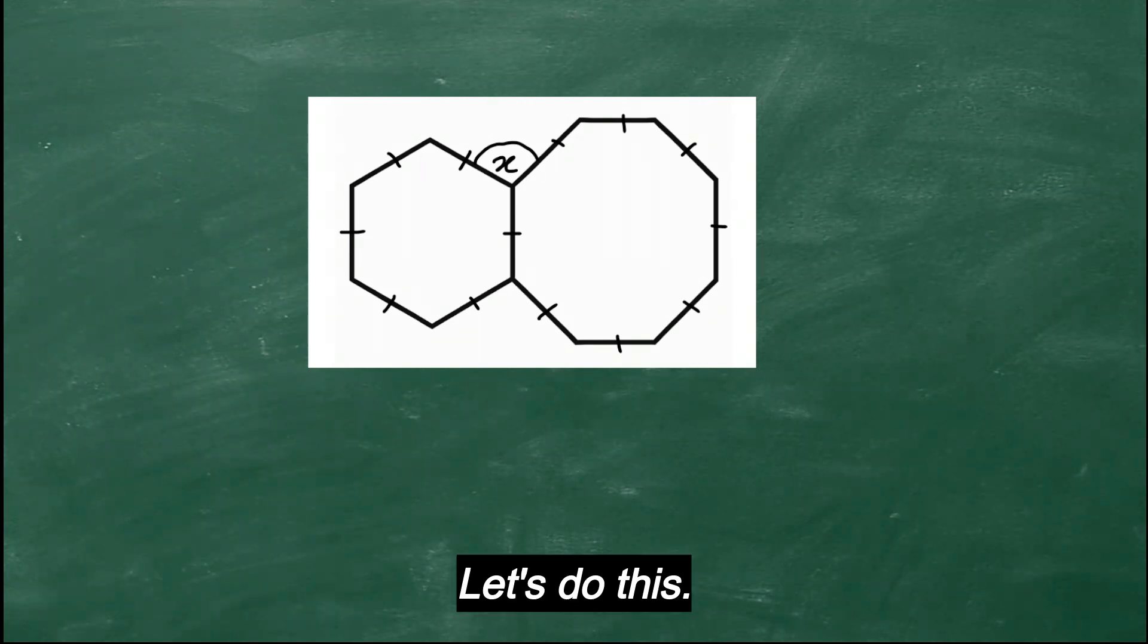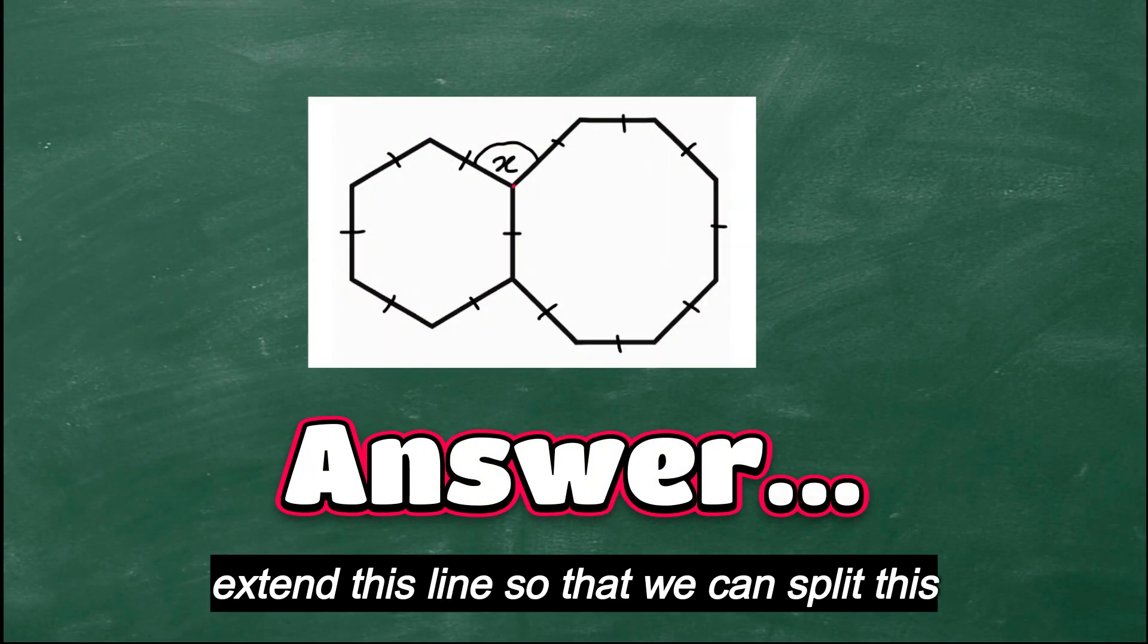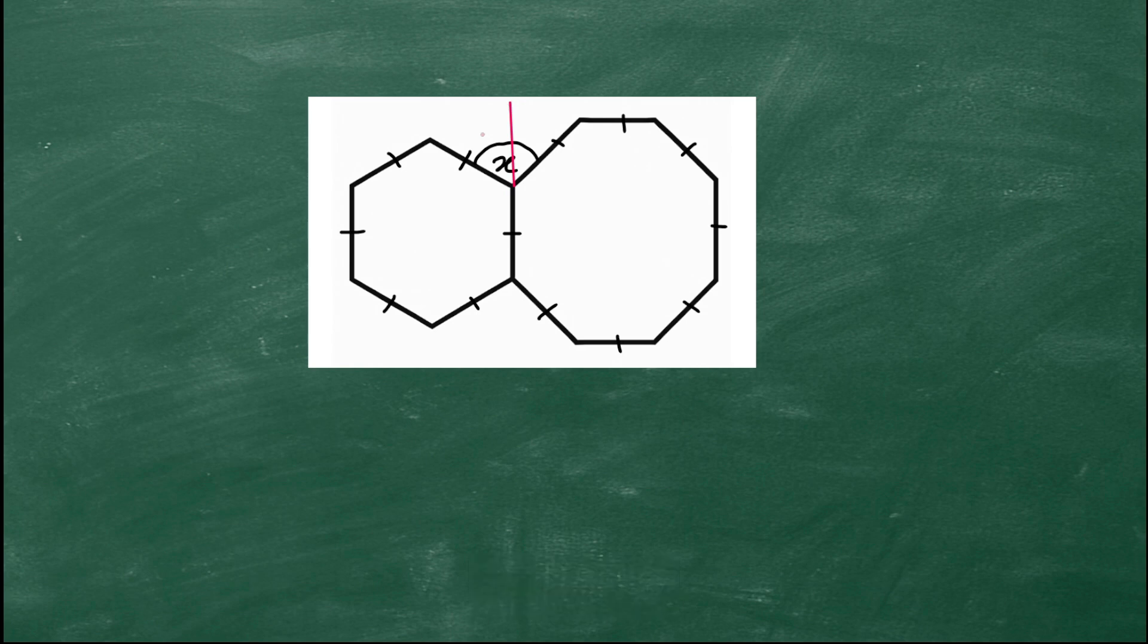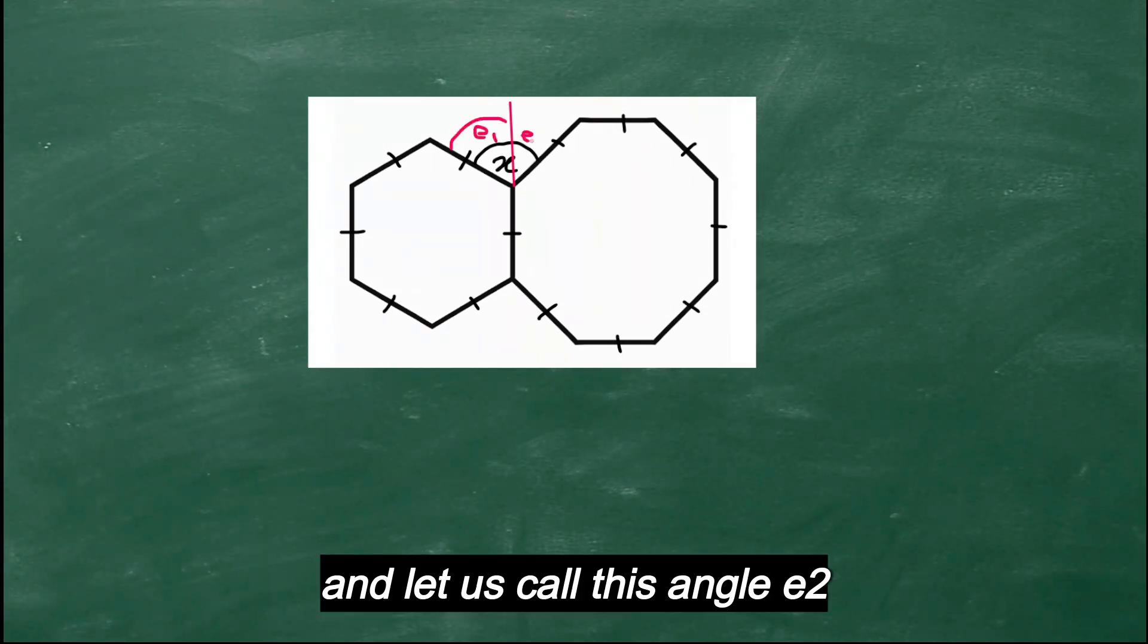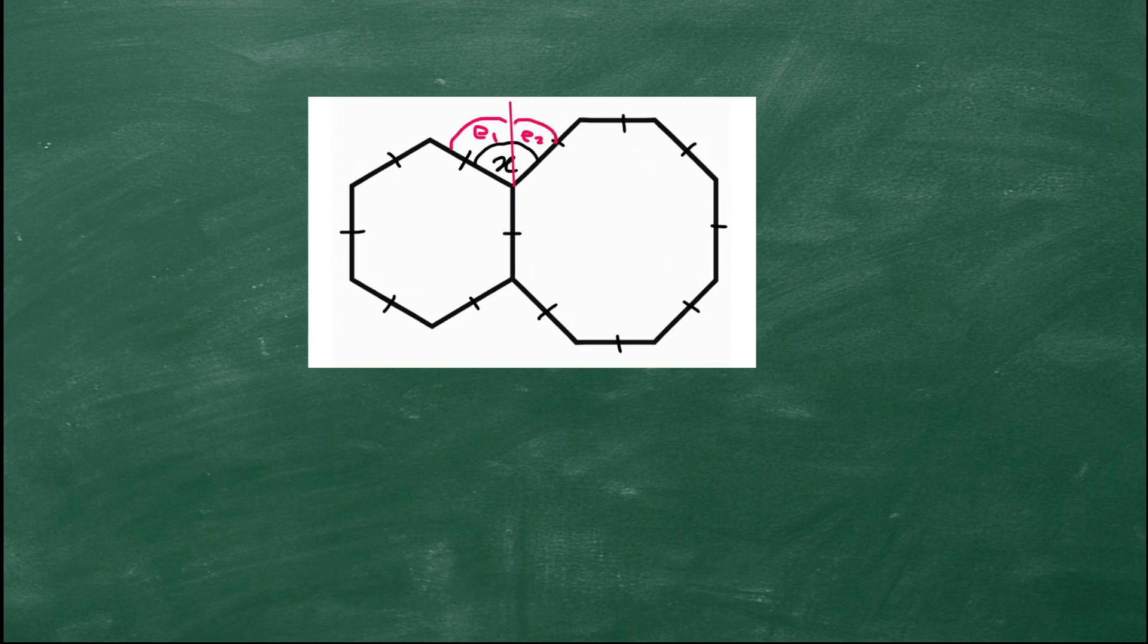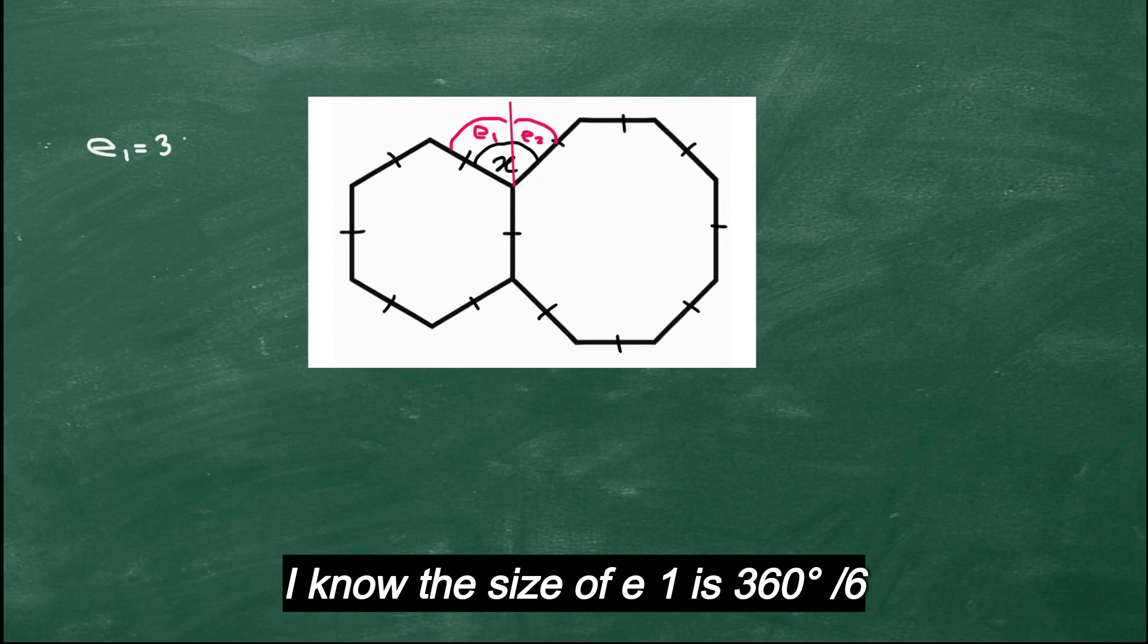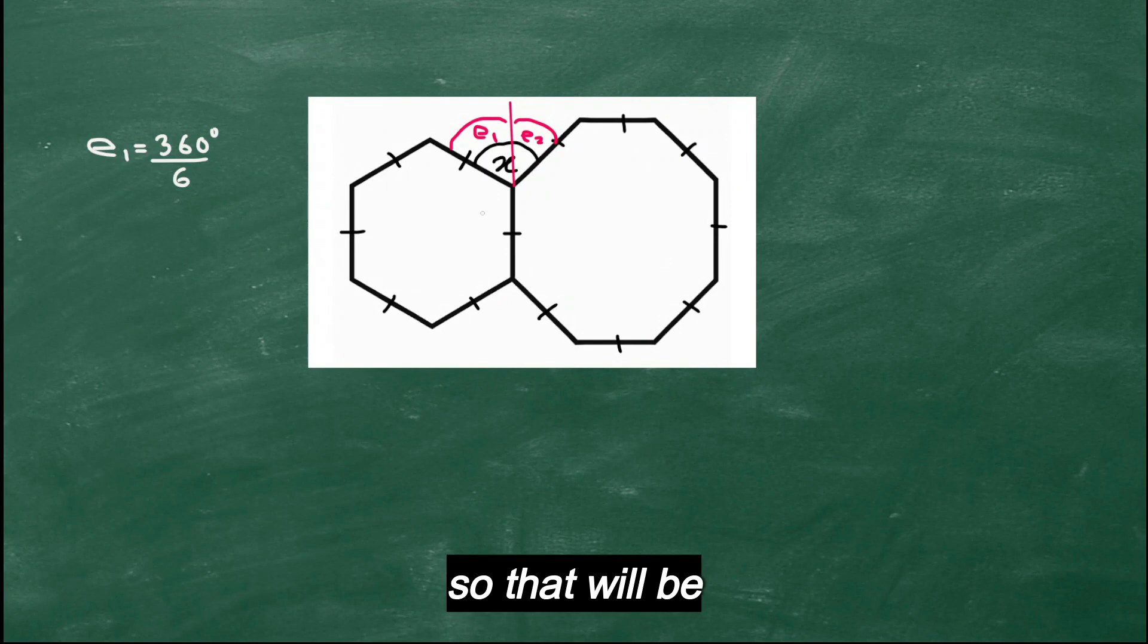Let's do this. So the first step is to extend this line so that we can split this angle here. So let's call this angle e1, and let's call this angle e2. Now I know the size of e1 is 360 degrees divided by 6, because this is a hexagon and there are six sides, so that will be 60 degrees.